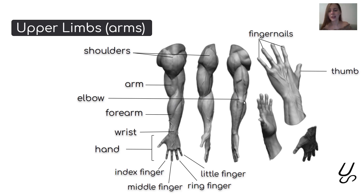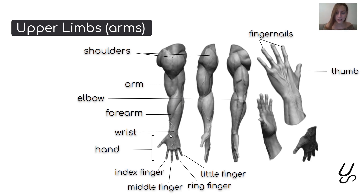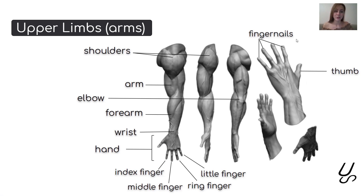This joint is called the elbow. Between the elbow and the next joint — which is called the wrist — is the forearm. So here we have the arm, the forearm, and the next thing is the hand. Each hand has four fingers with names such as index finger, middle finger, ring finger, and little finger, plus one thumb. Each finger also has its fingernails.